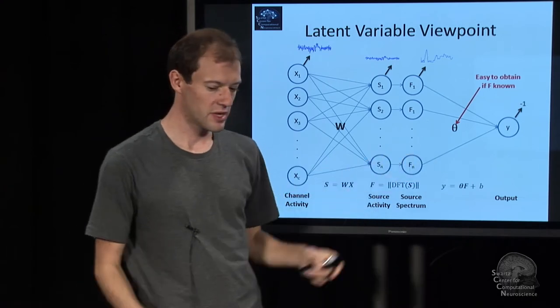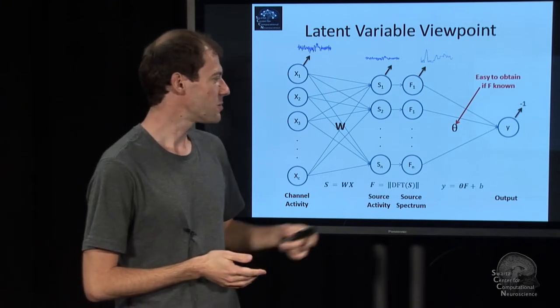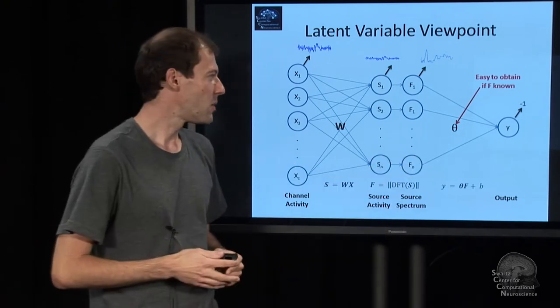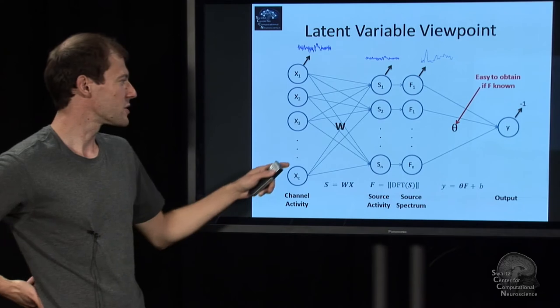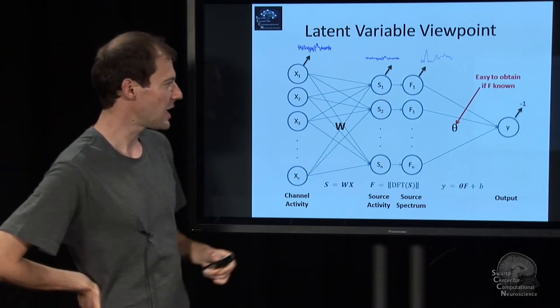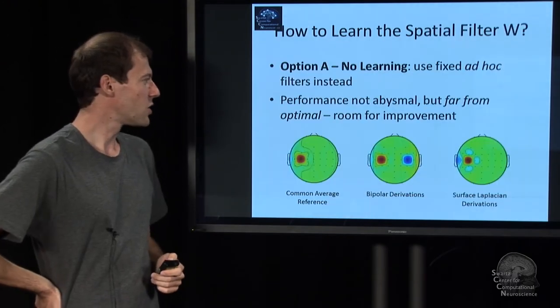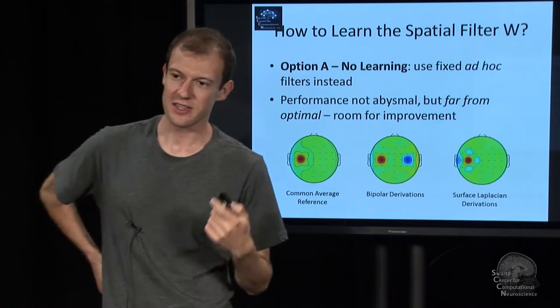We just train a classifier on the features and calculate this parameter, the linear weights of the classifier. Or if you had a nonlinear classifier, nonlinear weights. But what we don't have an algorithm for is how to calculate the W. LDA cannot optimize this because there's some custom stuff in between.